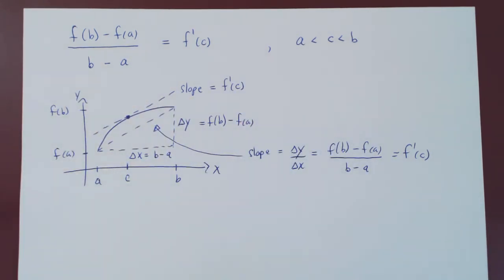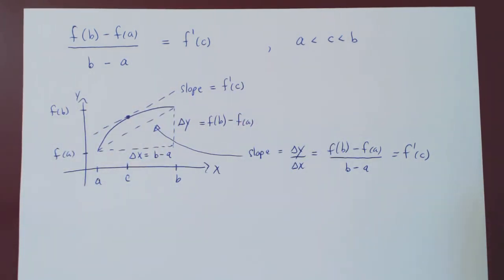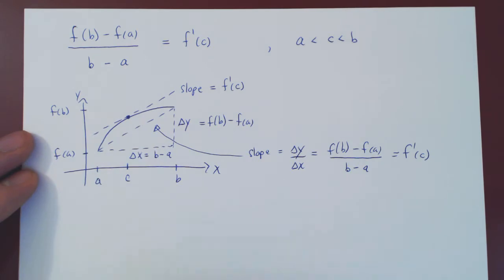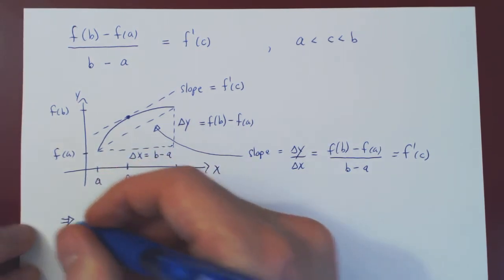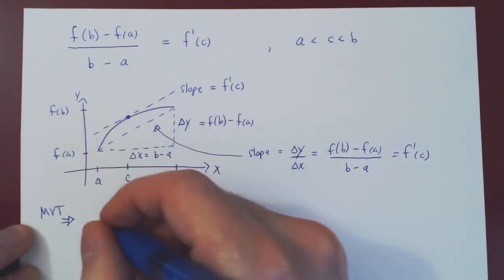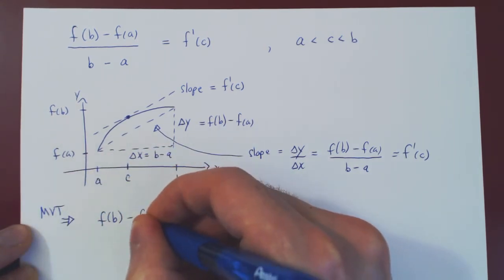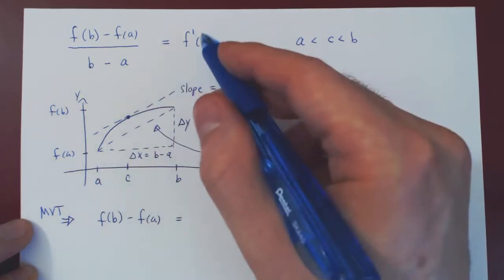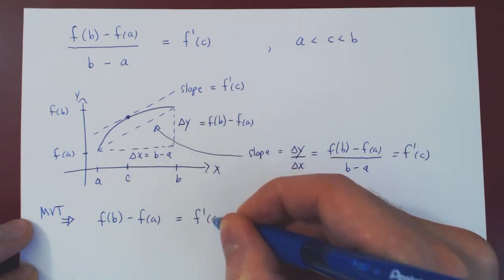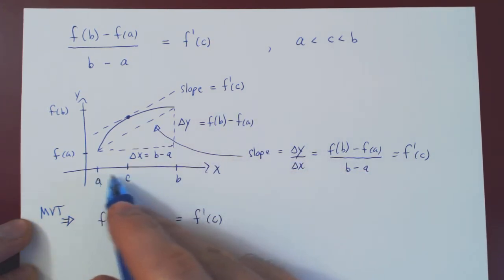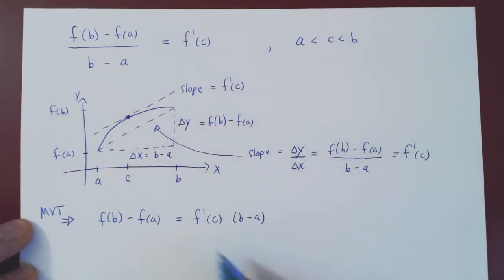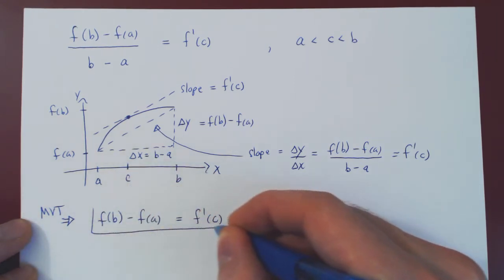Let me rewrite this, and we'll use it to prove something very intuitive but crucial in our study of antiderivatives. I'll simply multiply across by b minus a. So from the Mean Value Theorem, the total change in y — f of b minus f of a — over the interval from a to b can be given by the derivative at some point c in the interval, times the change in x, b minus a.